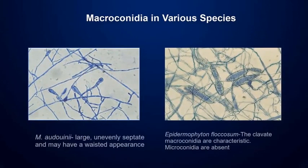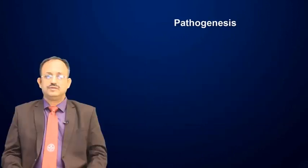Here you can see Microsporum audouinii with large, unevenly septate macroconidia that may have a wasted appearance. The Epidermophyton floccosum has clavate macroconidia which are characteristic, while microconidia are absent.